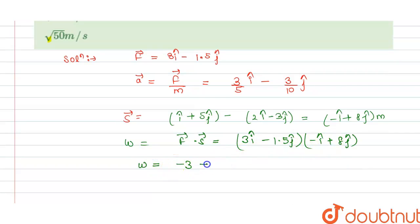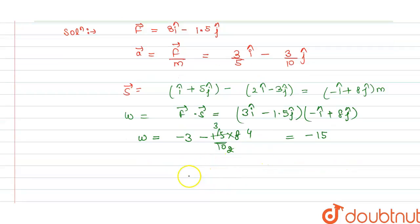So by solving this we get work done is equal to minus 3 and this will become minus 1.5 multiplied by 8. If we simplify, this will be 3 and 2 and this equals 4. So from this we get work done is minus 15 joule.